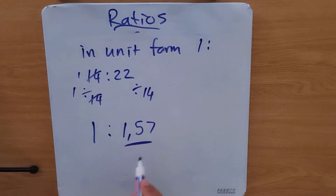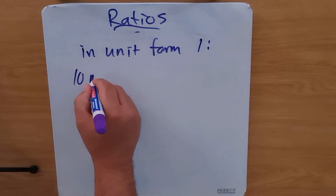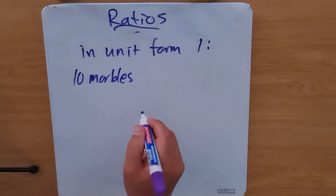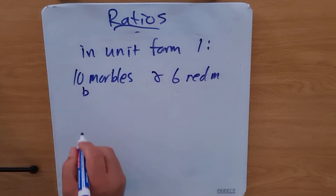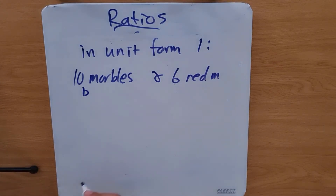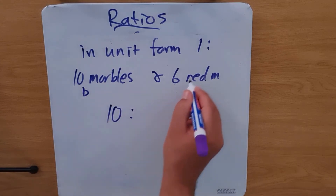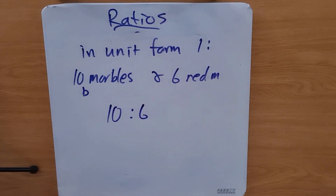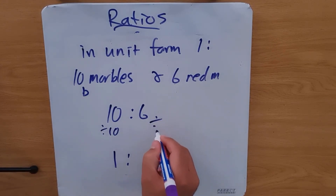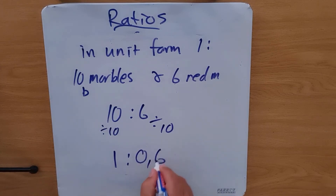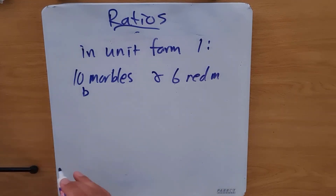Let's look at another example. In this example we've got 10 blue marbles and six red marbles. So I've got a ratio of 10 blue marbles to six red marbles. Now if I want to get that into unit form, I'm going to divide both sides by 10. That gives me one, and dividing six by 10 gives me 0.6. So that's taking it down to its unit form.